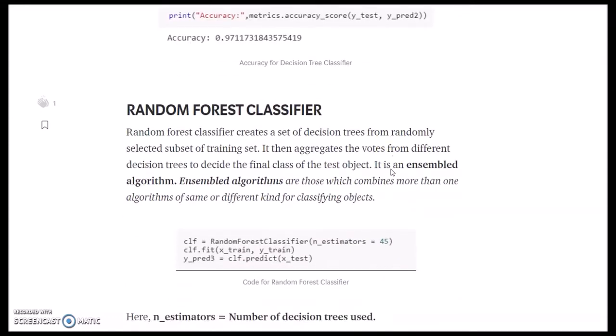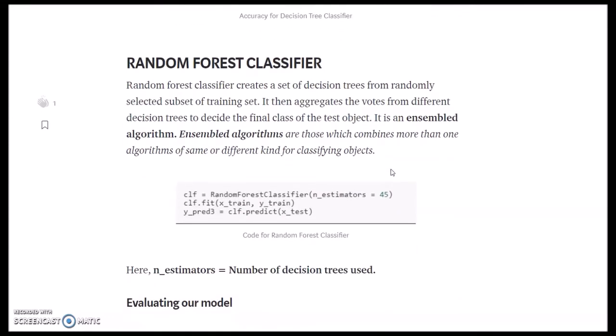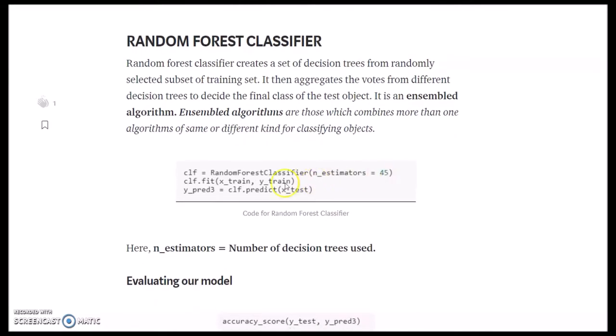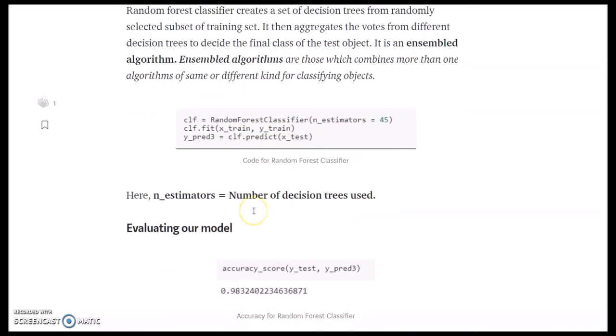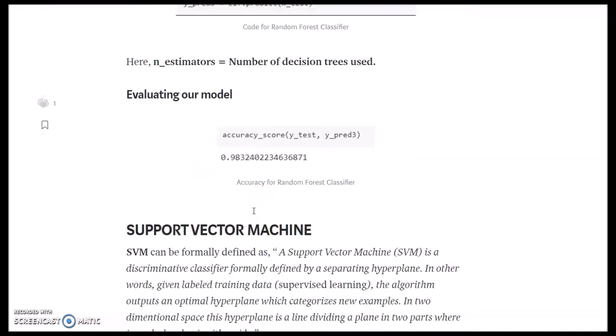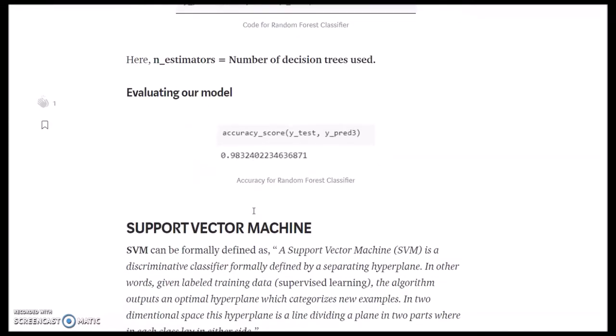Random forest classifier. Random forest classifier creates a set of decision trees from randomly selected subsets of the training set. This is the code and here we have used 45 n_estimators for the same. The accuracy is 0.983, which again is very good.